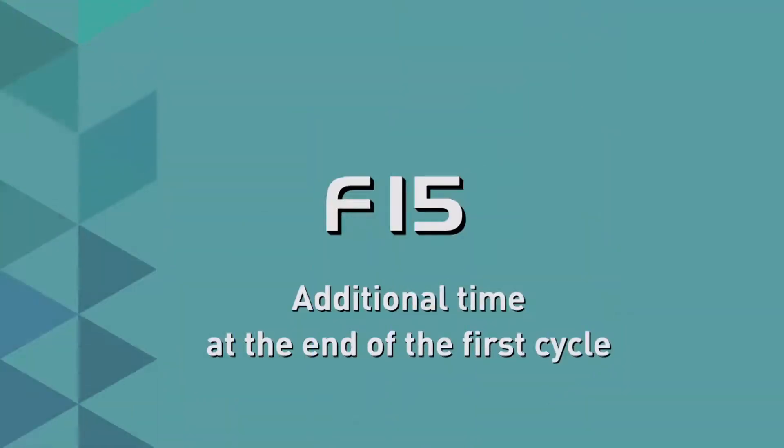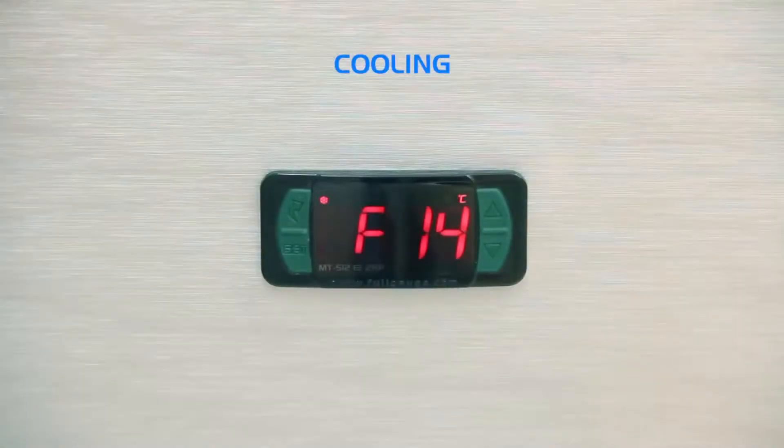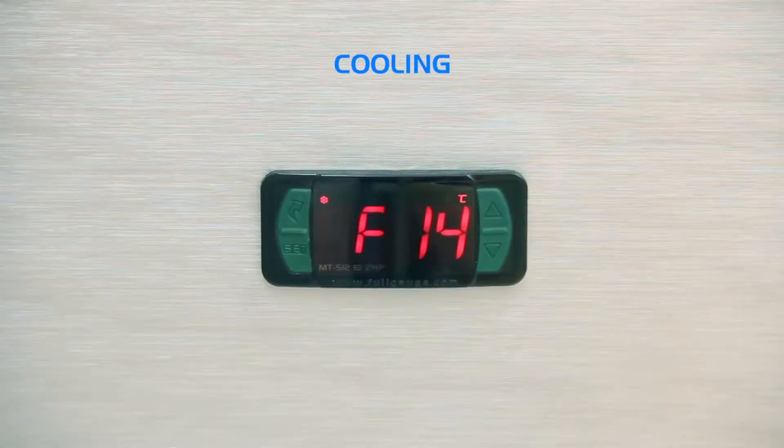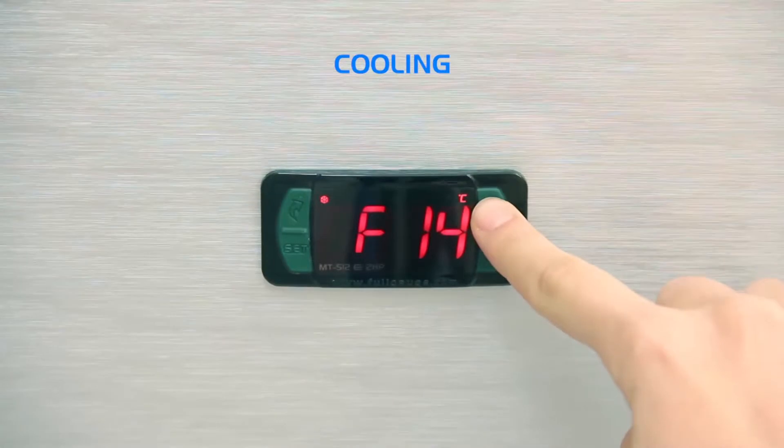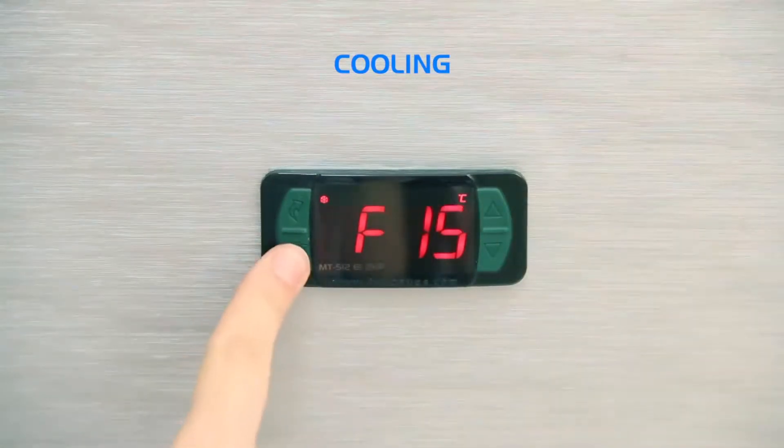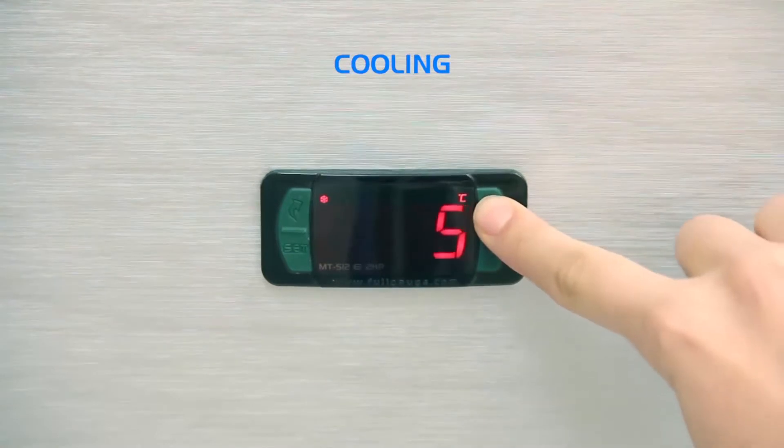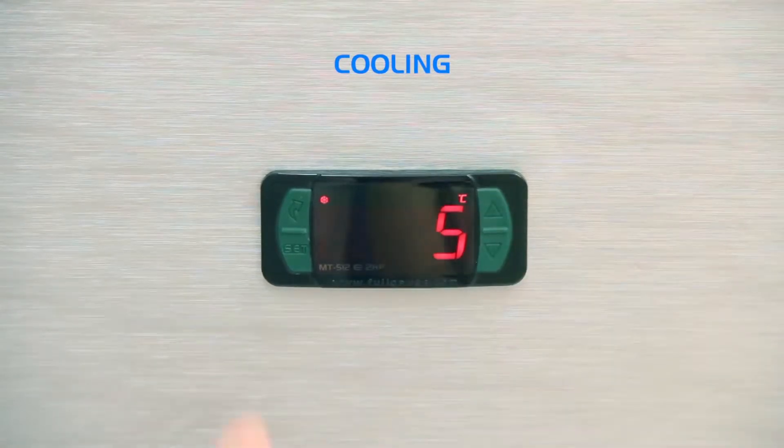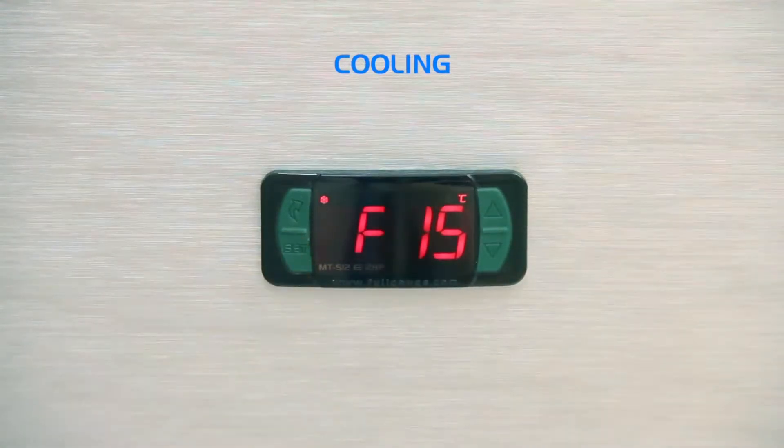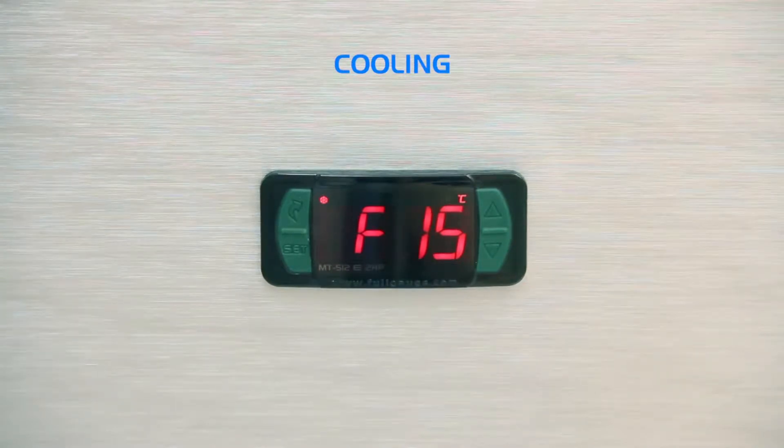F15 Additional Time at the End of the First Cycle: This parameter allows you to increase the cooling time of the first cycle after driving the controller. If you do not wish to adopt an additional time, select No, or provide a time of 1 to 240 minutes. In the example, we opted for an increase of 5 minutes.